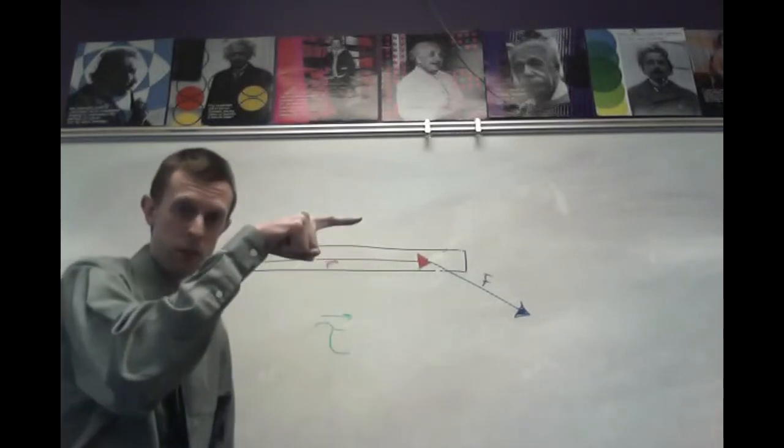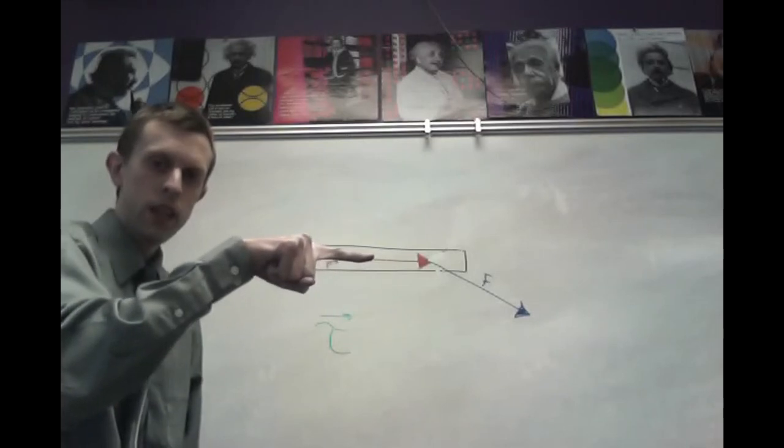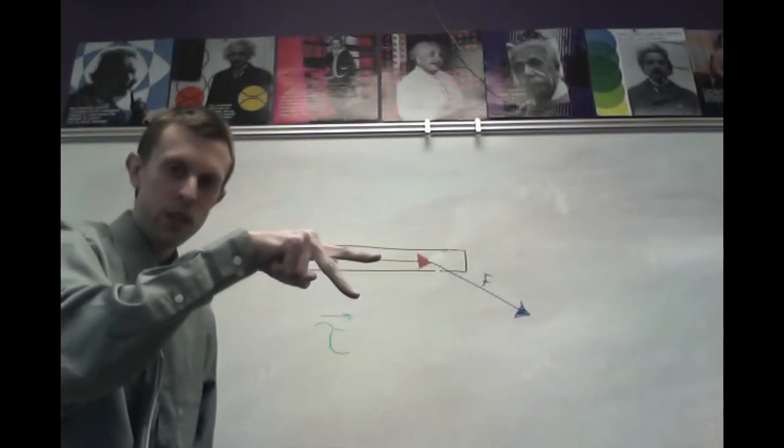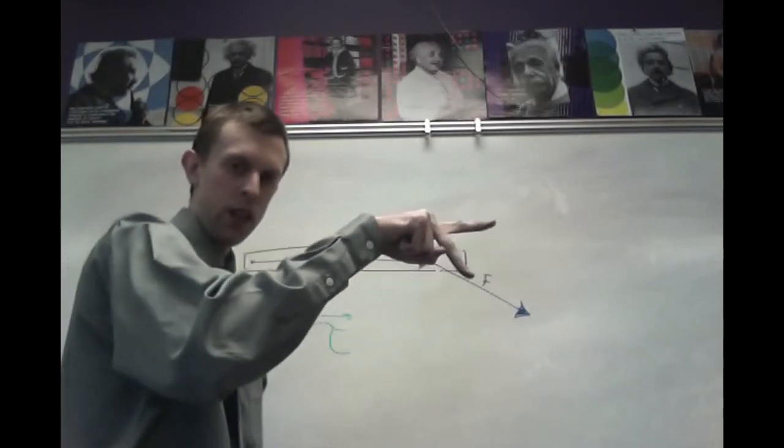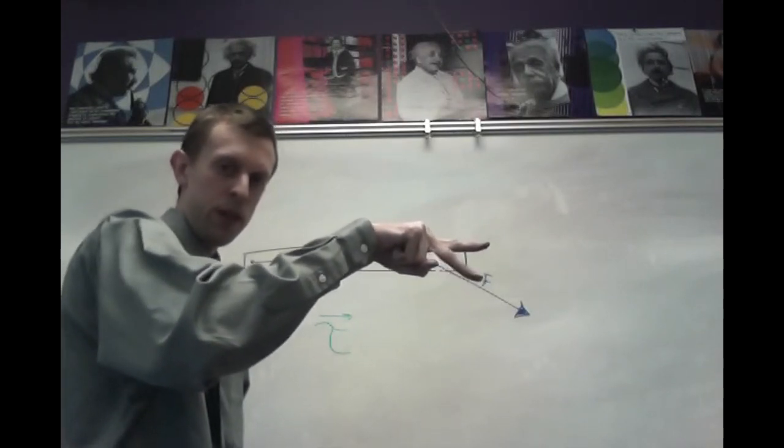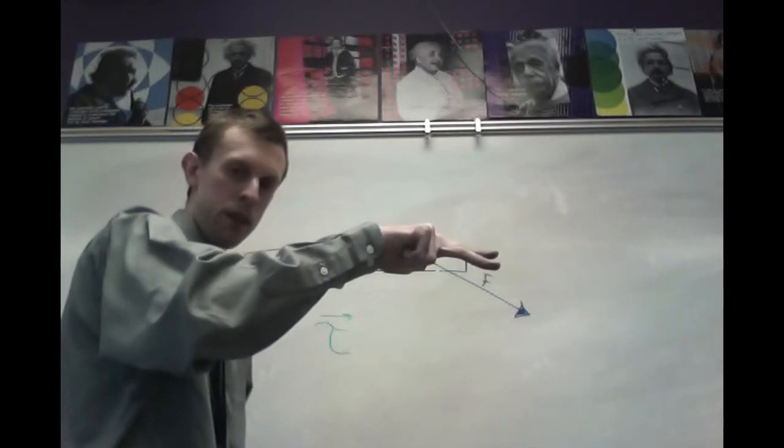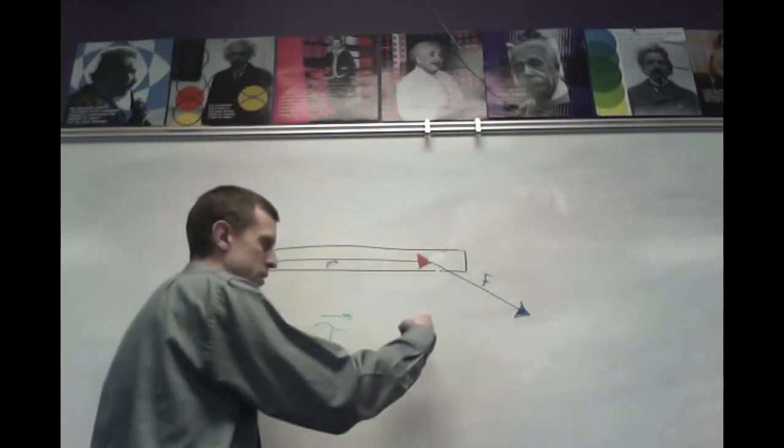So this time I get my pointer finger and point in the direction of r right there, and then extend my middle finger and get it lined up with F. So pointer finger is still pointed to the right, middle finger is lined up with F, and now I extend my thumb, and this time it's going in toward the board.